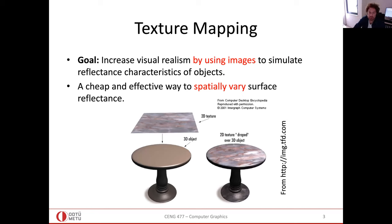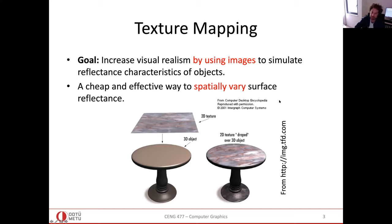The idea is to simulate reflectance characteristics of objects by using images — we borrow colors from images. In this example, that image is this piece, and when we map it to the surface, we effectively give colors to the surface point using that image. So there is no fixed one-color. We borrow colors from the texture. This is a cheap and effective way to simulate surface reflectance. All the diffuse shading we discussed previously still applies here as well. We simply replace the base color with colors coming from the texture elements.